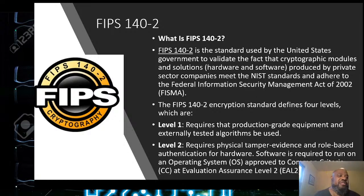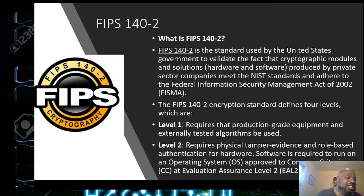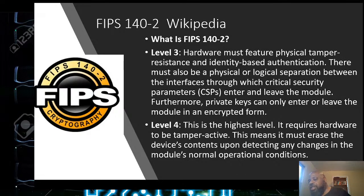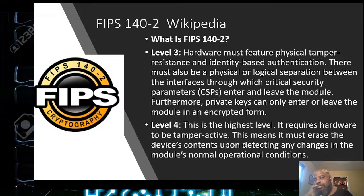Level one requires production grade equipment and approved external testing algorithms. FIPS 140-2 level two requires physical tamper evidence and role-based authentication for hardware. Software is required to run on an approved OS. When we talk about security, we check to make sure your OS is locked down — that applies to anything: OSes, databases, anything you use.